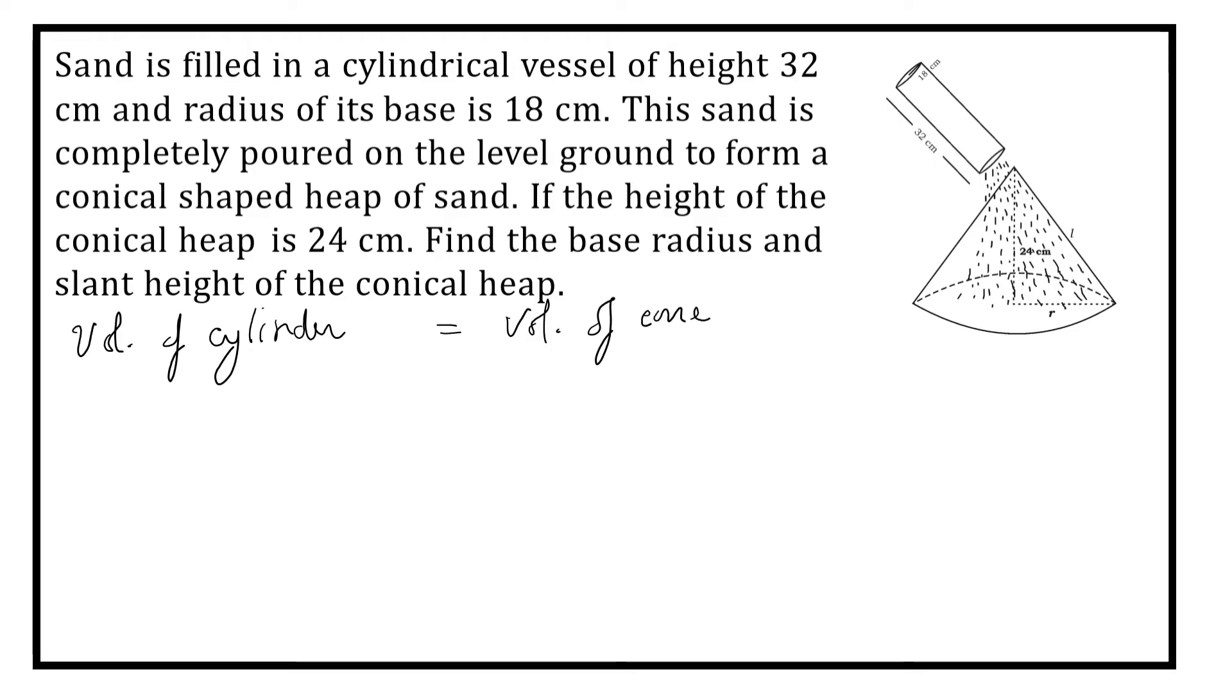Since when shape changes, volume does not change, volume of cylinder we have written formula. Now let us substitute the values. Pi, radius of the cylinder is 18 centimeter. So 18 square, height of the cylinder is 32, is equal to volume of cone 1 by 3 pi radius square. Height we know, that is 24.